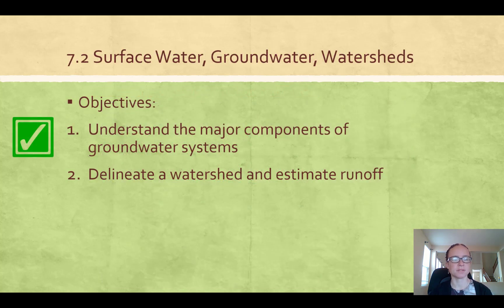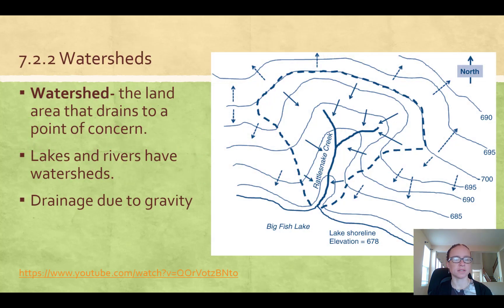That covers the major components of a groundwater system. The second objective is to delineate a watershed. A watershed is the land area that drains to a point of concern — all lakes and rivers have watersheds. It's usually determined by elevation, where water flows to a single point due to gravity. Humans can also create watersheds when they make man-made lakes or dam up rivers.